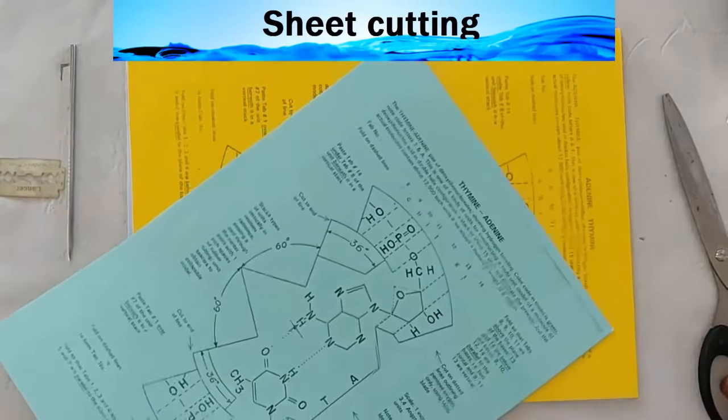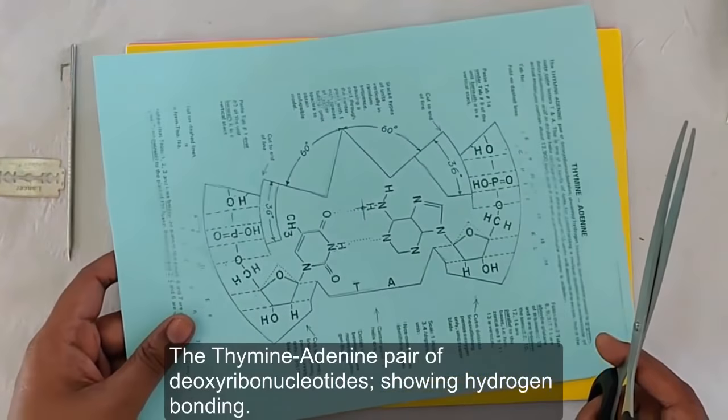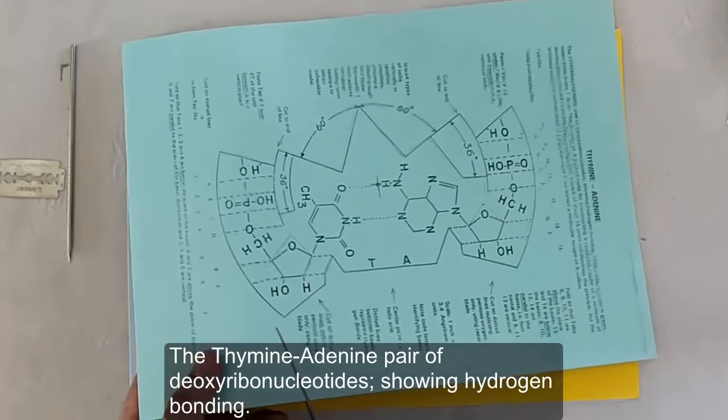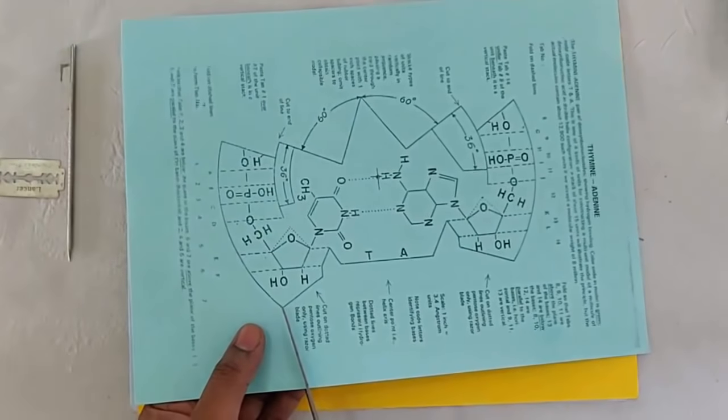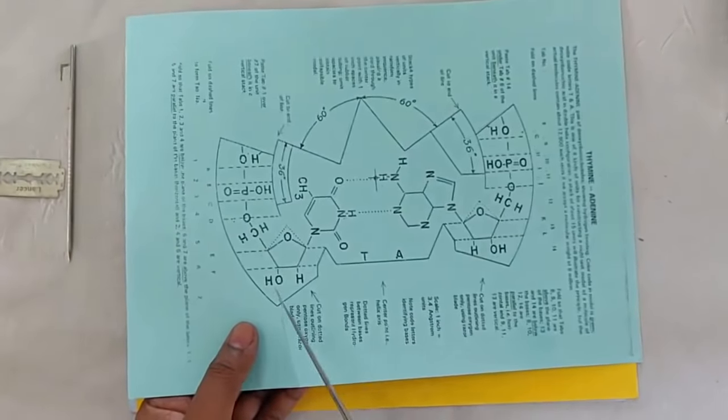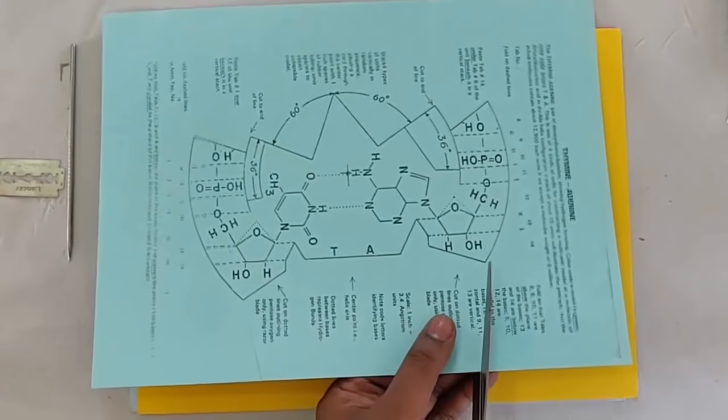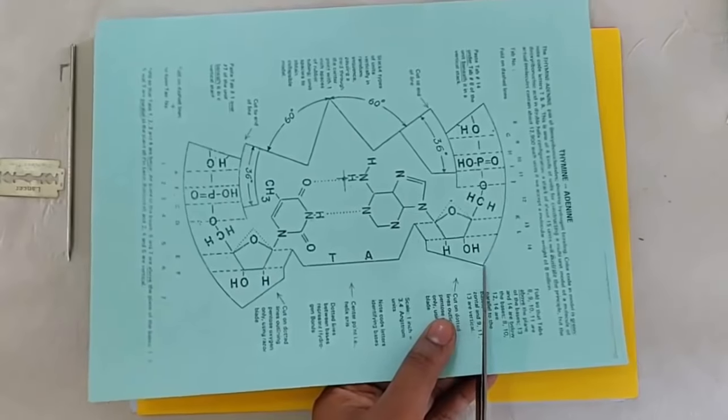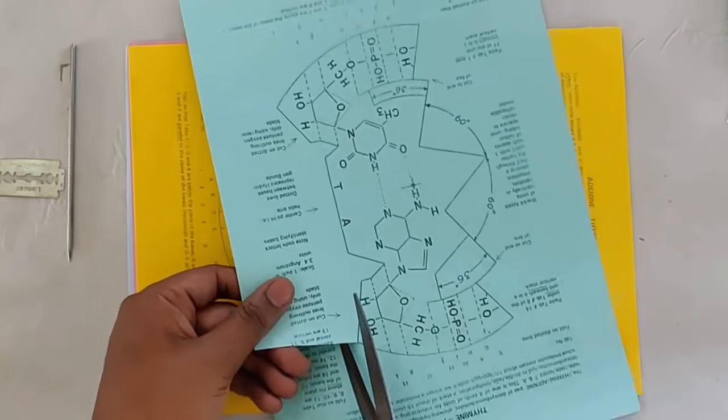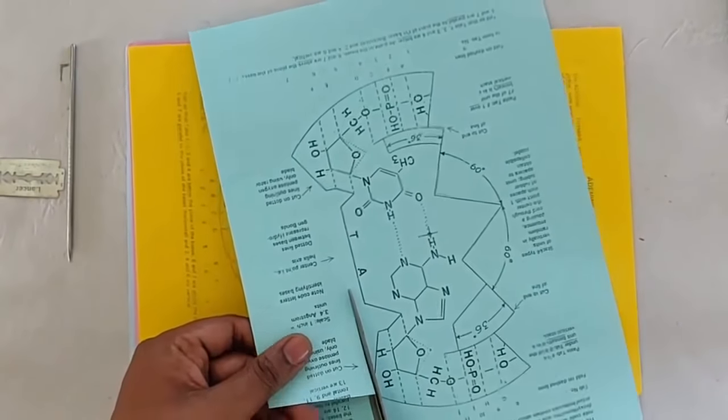The thymine-adenine pair of deoxyribonucleotides. Be very careful when cutting the sheet. Cutting out the excess part will help you for the fine cutting of the sheet.